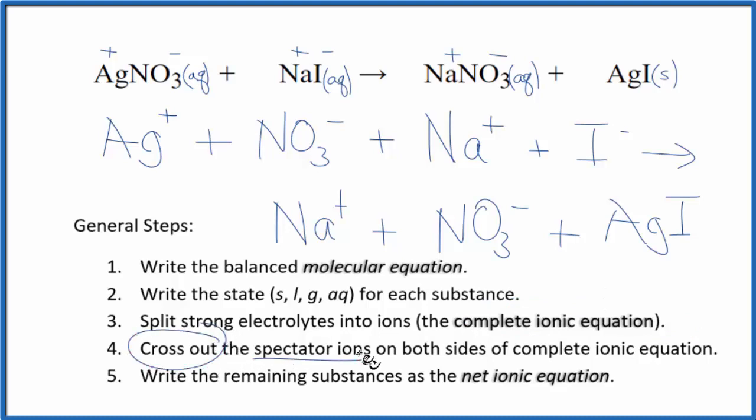Now, we can cross out spectator ions. They're on both sides of the complete ionic equation. They don't really change, so we're not interested in them. So, here in the reactants, I can see a nitrate ion, and the product's a nitrate ion. I'm going to cross that out. Sodium ion, sodium ion. Cross it out.